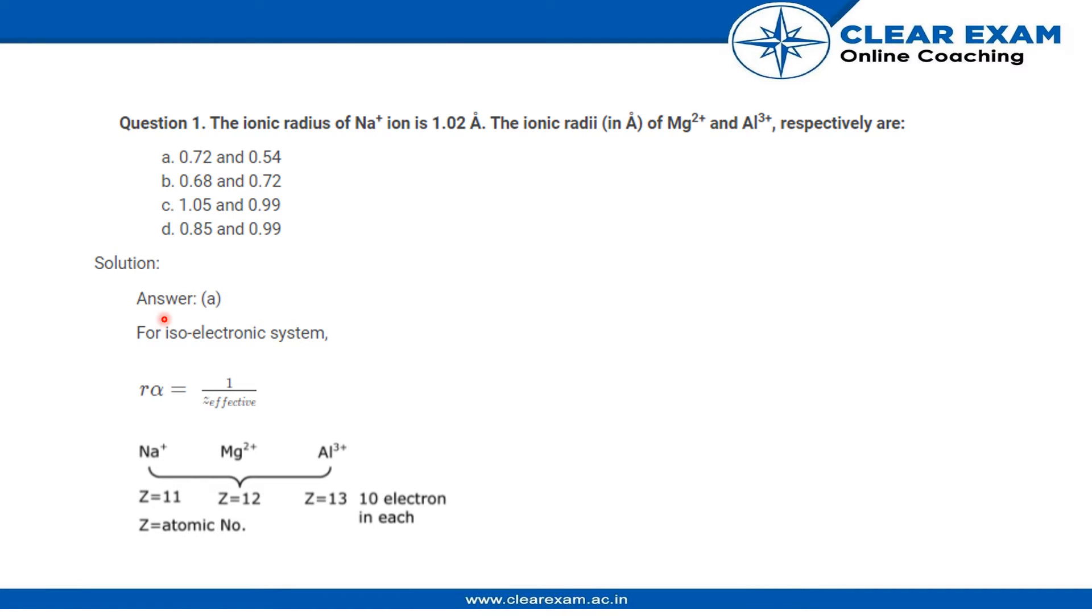These are isoelectronic systems - the number of electrons in Na+, Mg2+, and Al3+ are the same. Whenever this happens, we know that radius depends on the number of electrons present. Since it is an isoelectronic system, we have to find the effective atomic number.